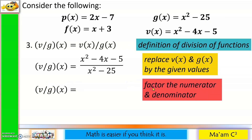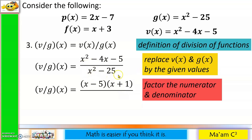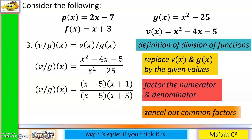Then we factor the numerator and denominator. Knowledge of factoring trinomials and binomials is an advantage here. The factors of x² − 4x − 5 are (x − 5)(x + 1), all over the factors of x² − 25 which are (x − 5)(x + 5). Canceling the common factor (x − 5), we are left with (x + 1) / (x + 5). This is our answer for (v ÷ g)(x).